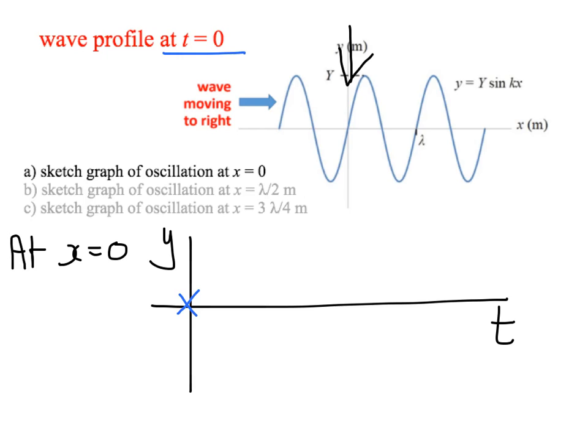We know that it's going to be sinusoidal in shape, so all we need to decide is, is it a positive sine? In other words, is it initially increasing in displacement or is it initially decreasing, in which case we draw a negative sine? The way we do that is by looking at the direction that the wave is moving in relation to the particular point that we're interested in. In other words, at x equals 0.